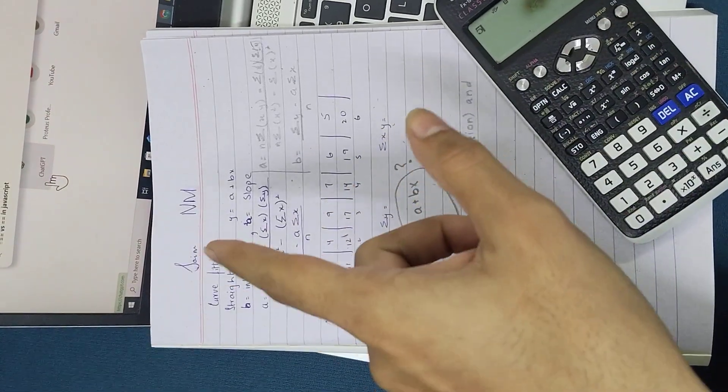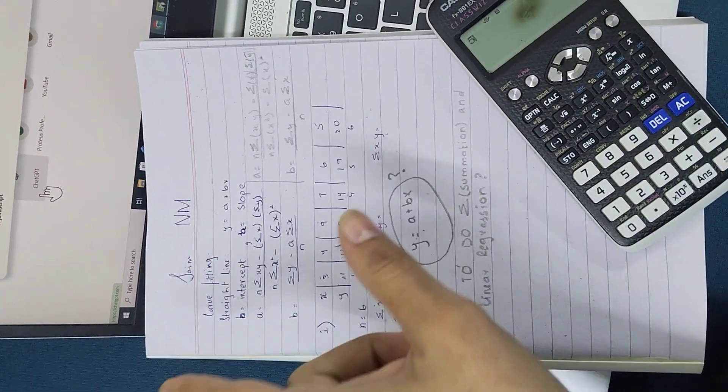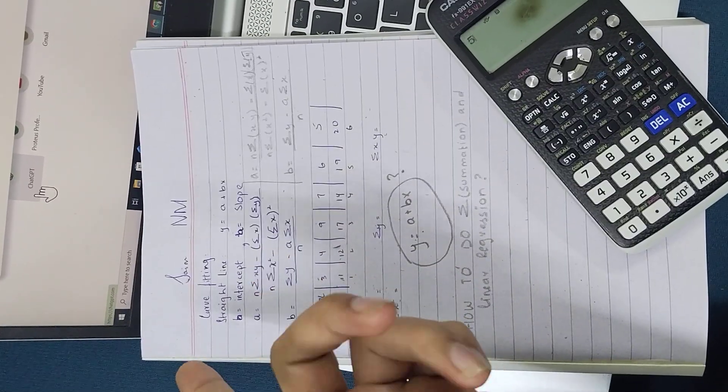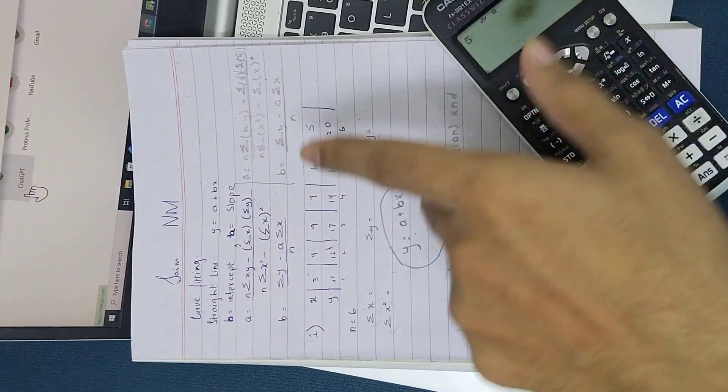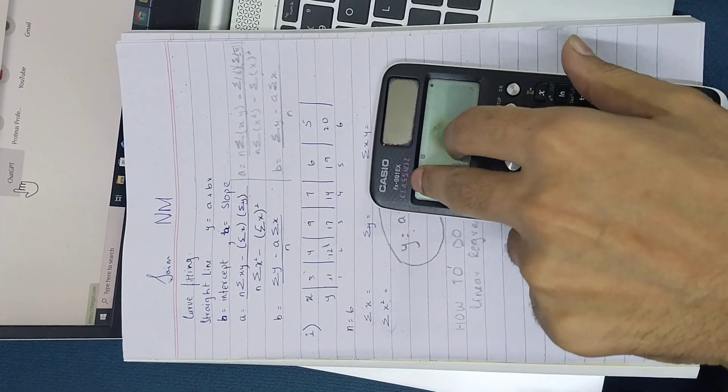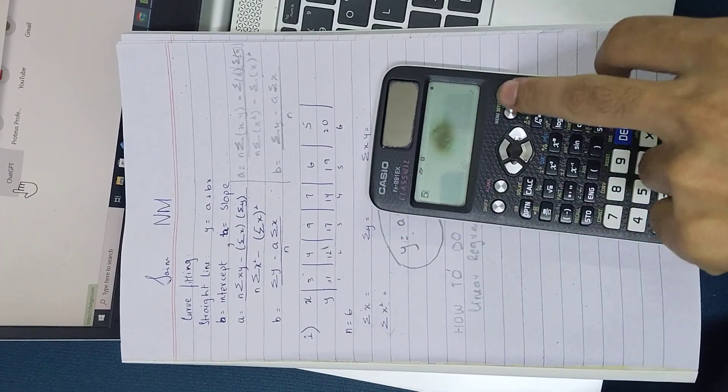Okay, so I'm doing numerical methods and my topic is curve fitting, in which I have to do linear regression and summation of this table. I will tell you how to do this in Casio FX 991 EX.